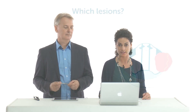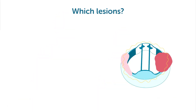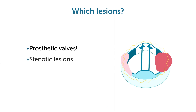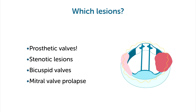In which lesions do you have a higher probability of developing endocarditis? Well, apart from prosthetic valves, it's stenotic lesions, bicuspid valves, or mitral valve prolapse. So, to remember: every kind of lesion where you have high-velocity jets.